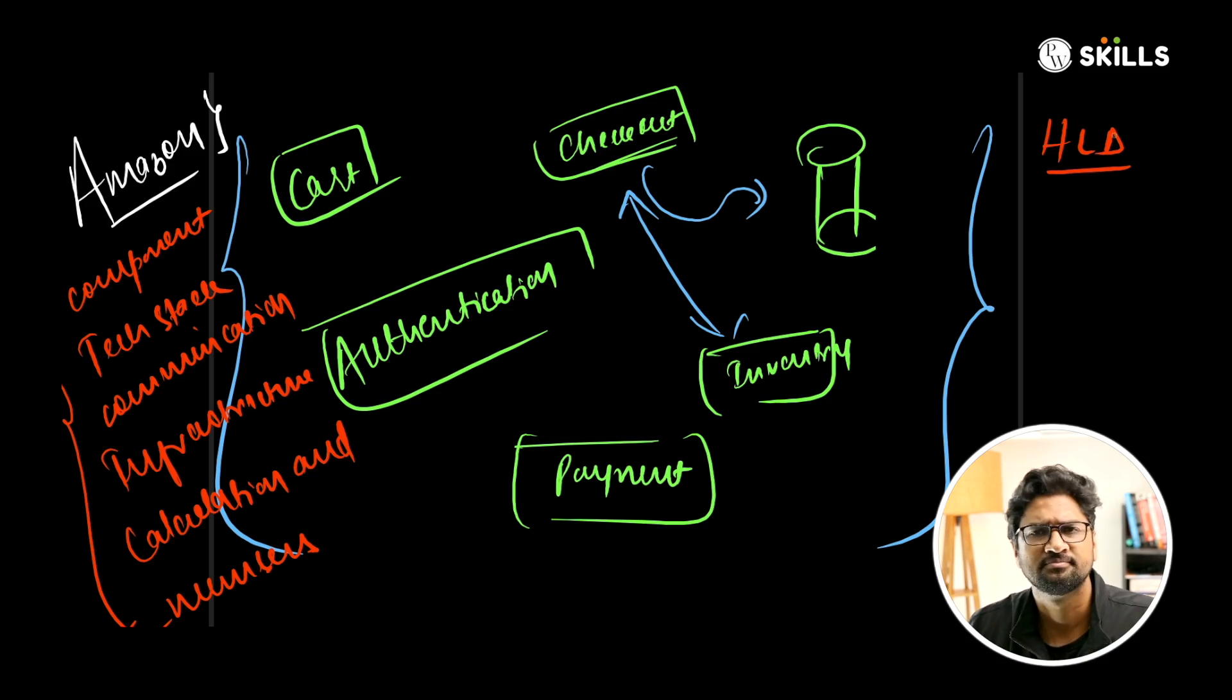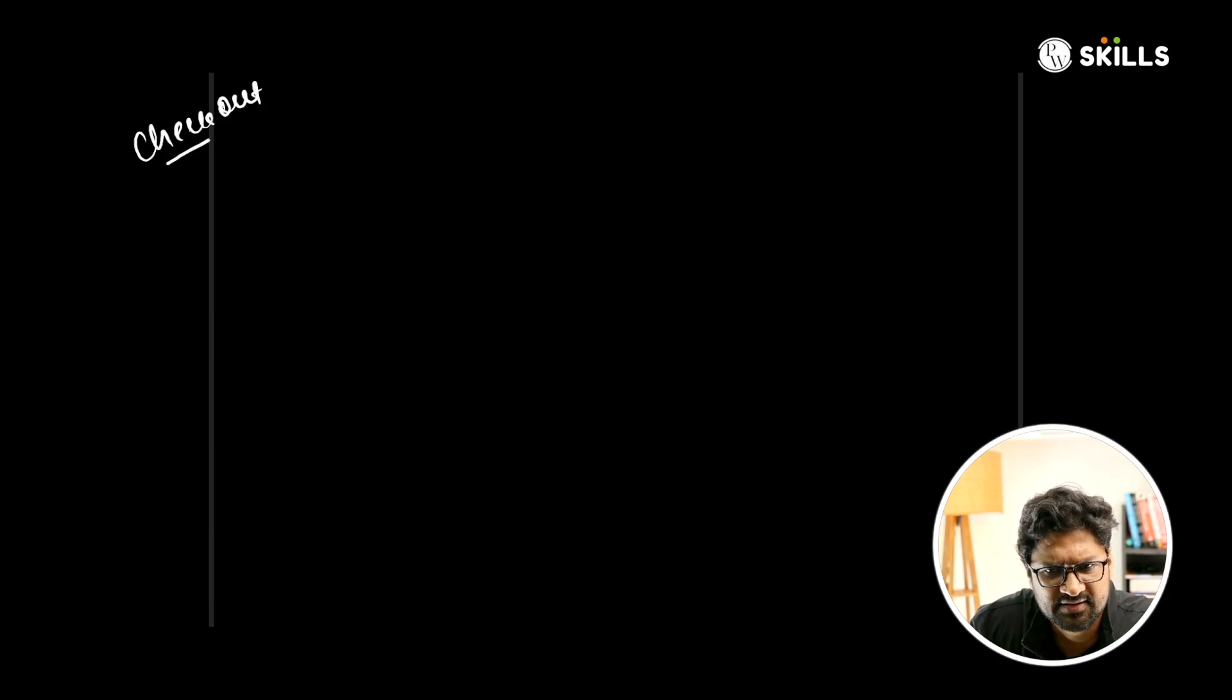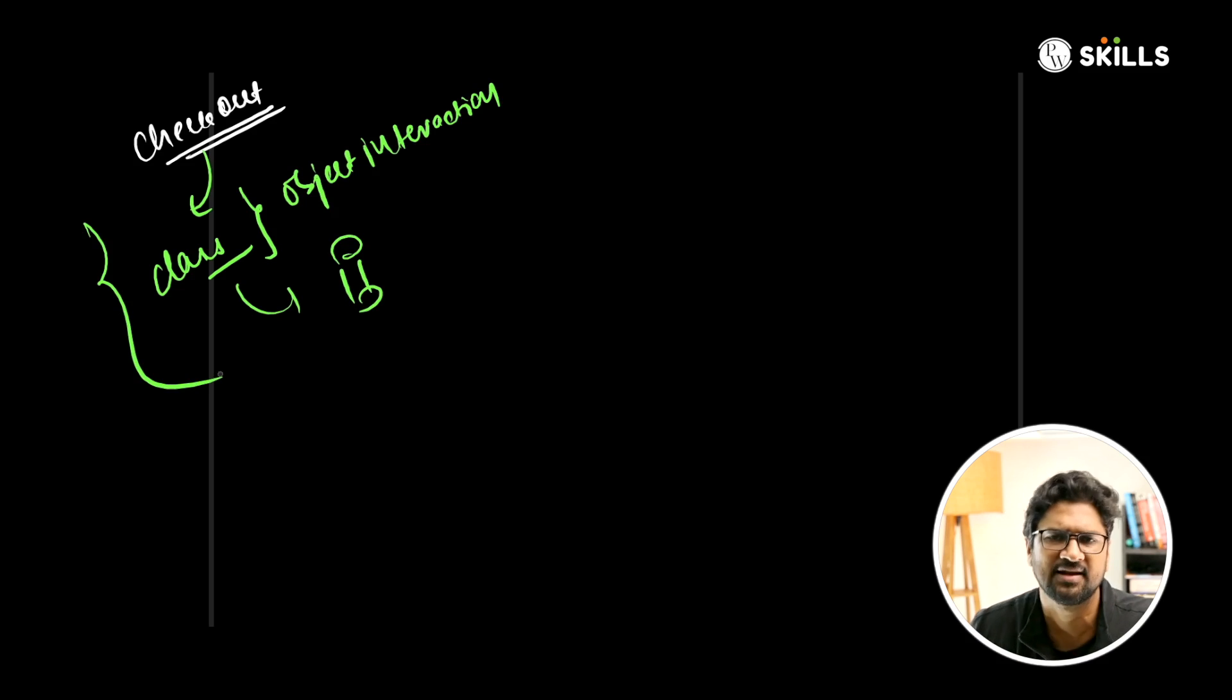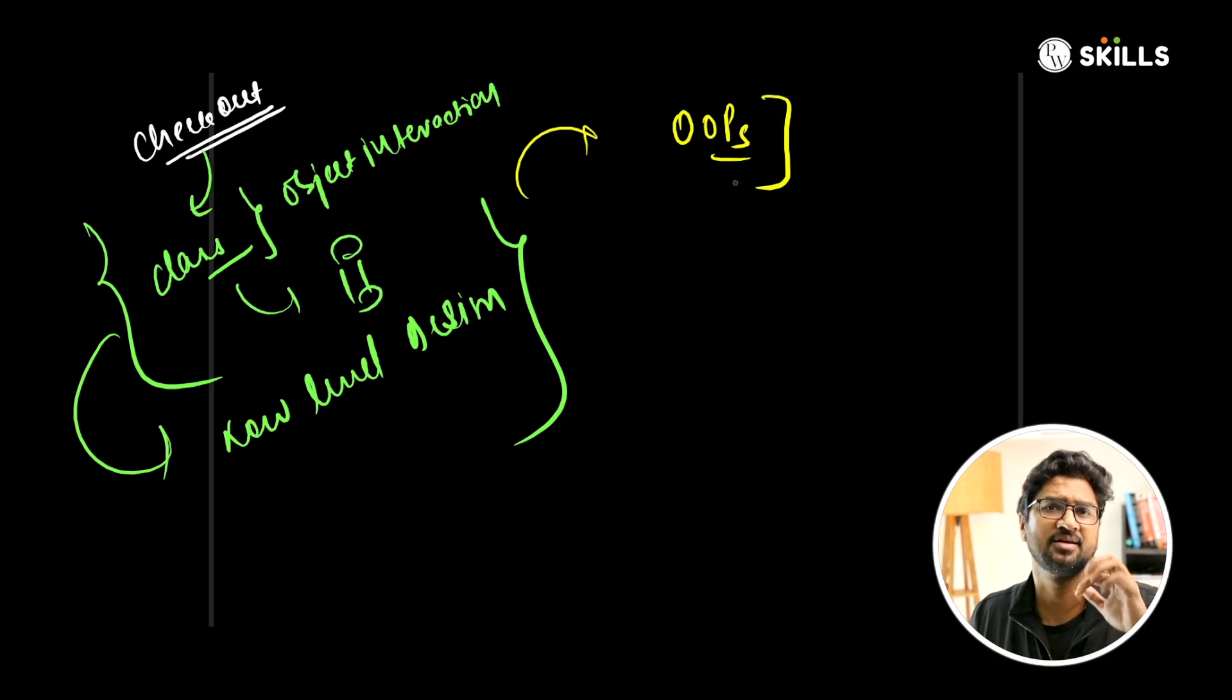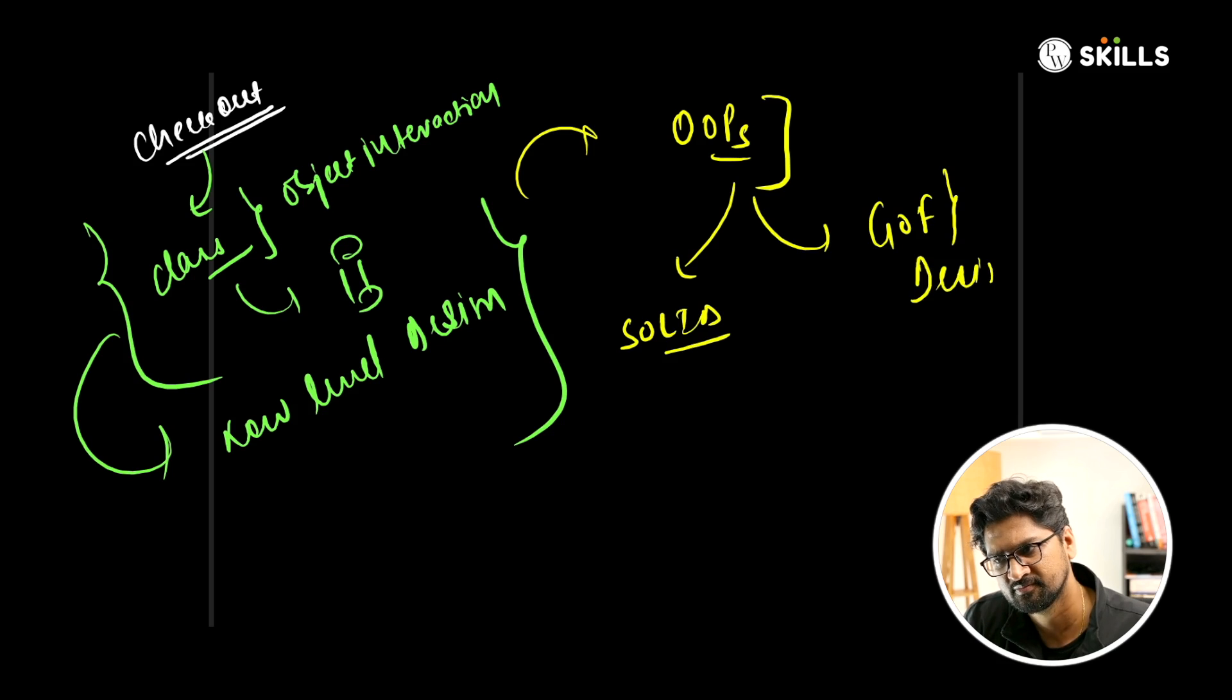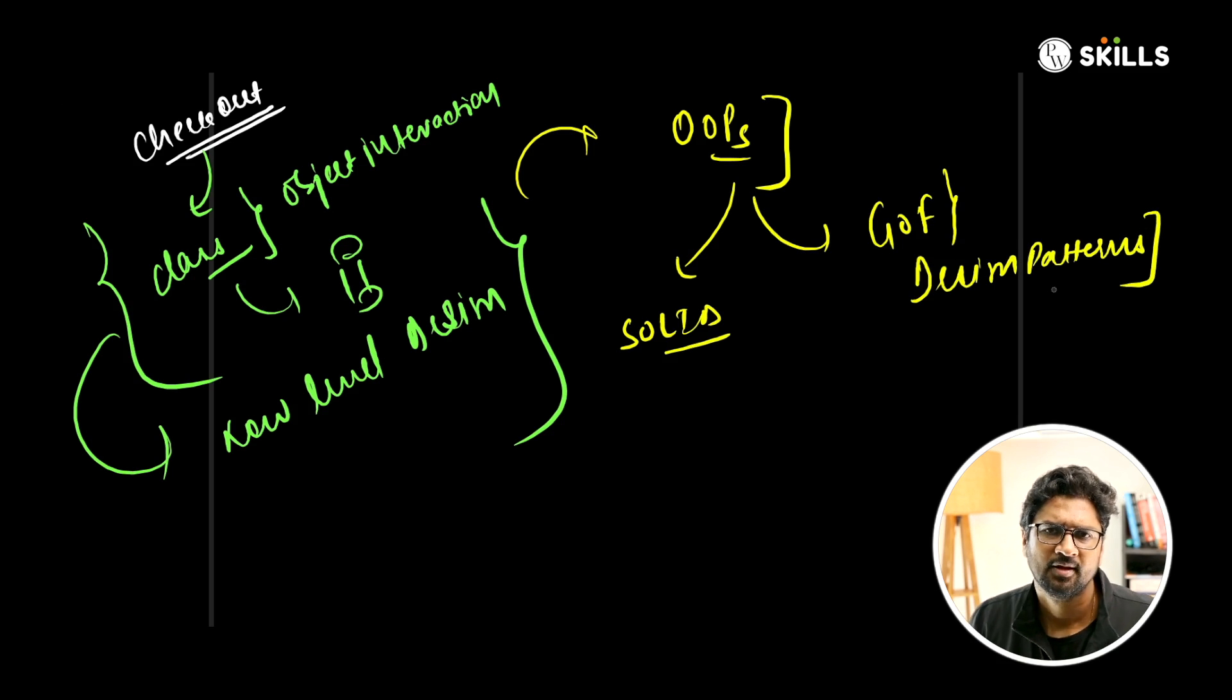In low level design, you go deeper - let's say I want to build the checkout system. What will be my classes? How will object interactions happen? How will it talk to the database? This is where you make use of OOPs concepts. You learn how to apply object-oriented programming concepts like SOLID principles and Gang of Four design patterns. Normally when you're early in your career or a fresher, interviewers will grill you on low level design - design a multi-level car parking, library management system, traffic management system.